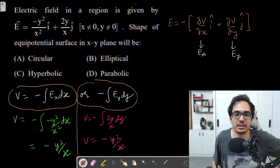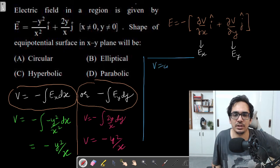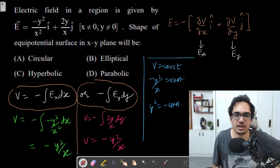Once you have the potential as minus y squared by x, now the equipotential means potential is same. The equation is very simple - potential should be constant. That means minus y squared by x equals constant. So basically y squared equals minus some constant times x. This is the equation of a parabola.